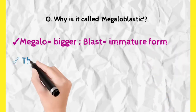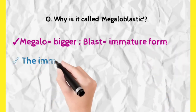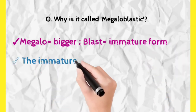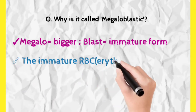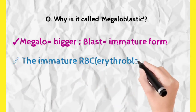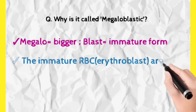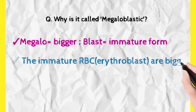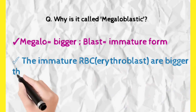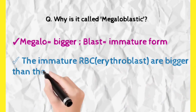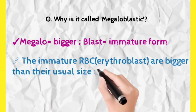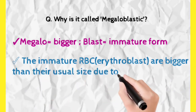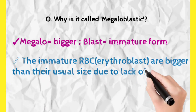Why are they bigger in size? Because of impaired DNA synthesis. Since DNA synthesis is impaired, the erythroblast is bigger in size as compared to its usual size.